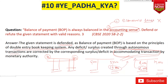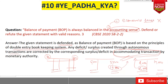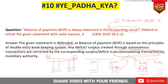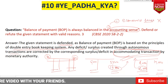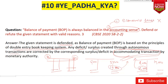Because double entry bookkeeping system is followed in accounts — every entry will have a debit and a credit — every account, including the BOP account, is balanced. It is balanced in accounting sense. This was a good question. Many students ignore it and don't study it carefully, so it is a very important question.